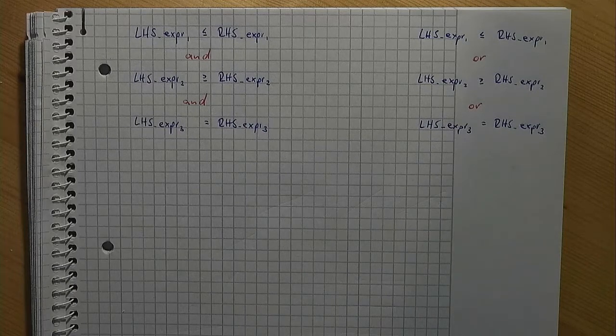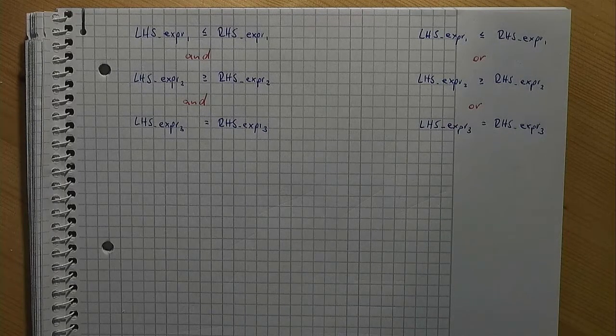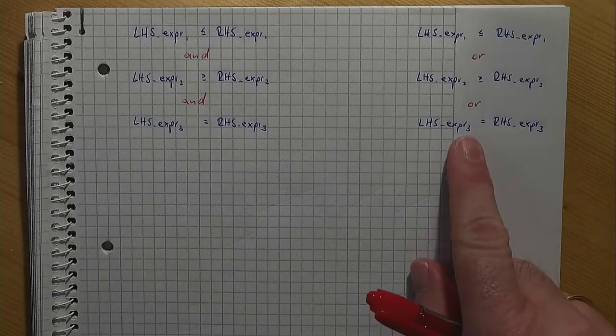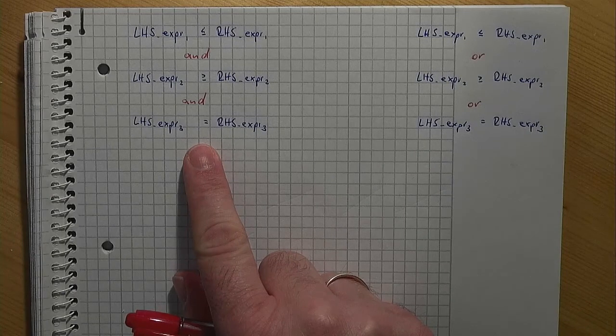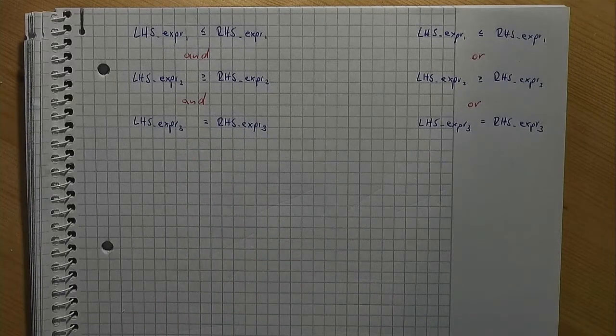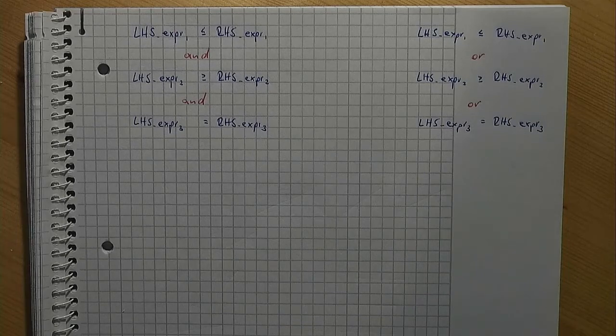But keep in mind, it's not as easy as it may look like on this sheet of paper. We want to have this, but this is the only way we can link constraints. We do not have an OR operator to link constraints.